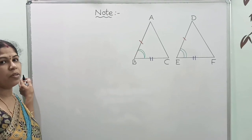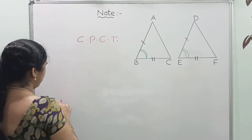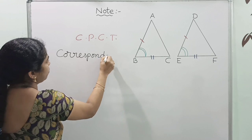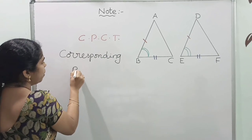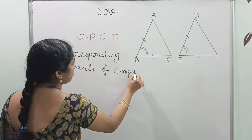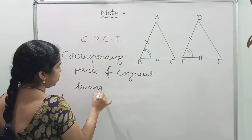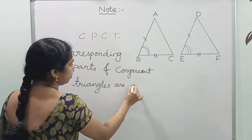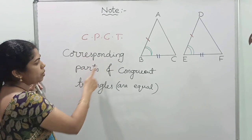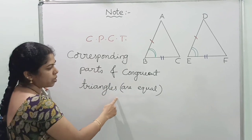Before learning the exercise problems, we need to remember a few points. One is CPCT. What is CPCT? CPCT means corresponding parts of congruent triangles are equal. So the corresponding parts of congruent triangles are equal.